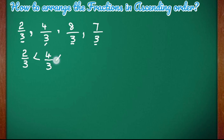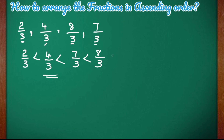Then comes 4 by 3, then 7 by 3, and lastly 8 by 3. This is how we can write the fractions in ascending order if their denominators are same, that means if they are like fractions.